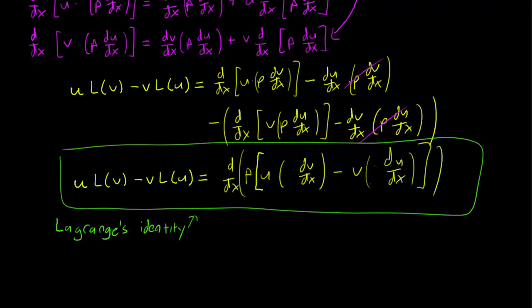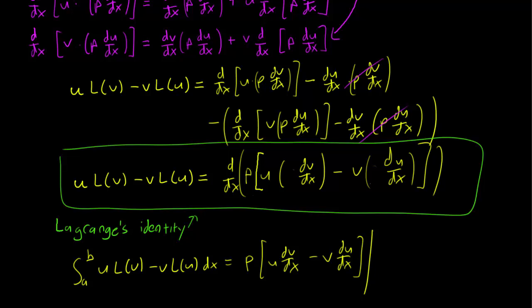We can also integrate this on both sides from a to b to get another important formula. When we do that, we take the integral from a to b of uL(v) minus vL(u) dx. The derivative cancels out, so we are just left with p[u dv/dx minus v du/dx], evaluated from x equals a to b.